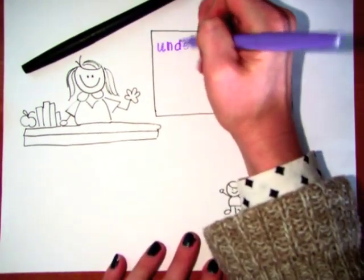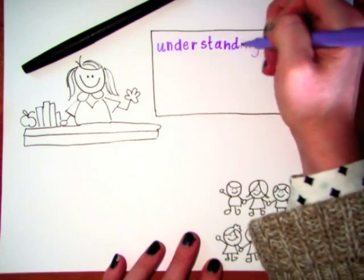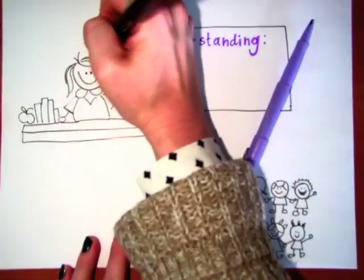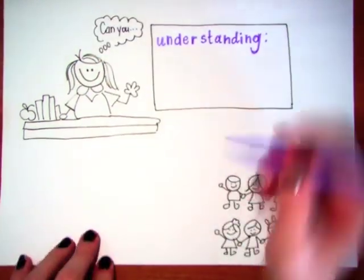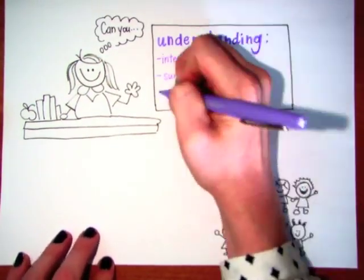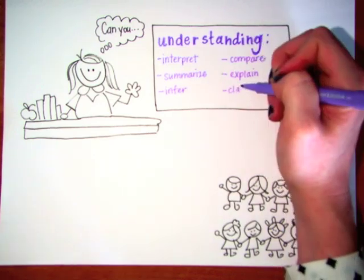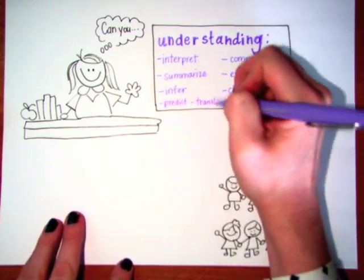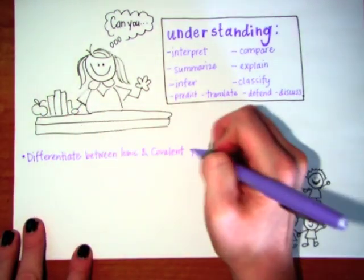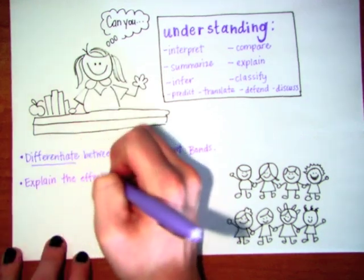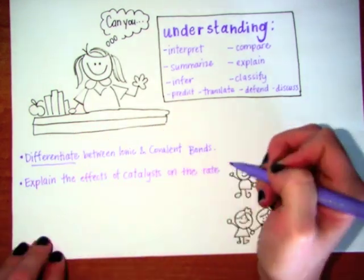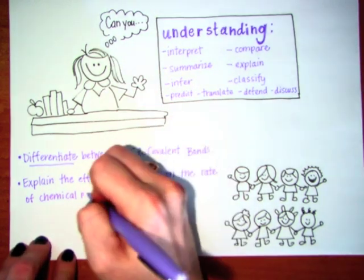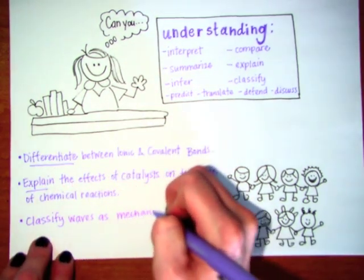The next level of Bloom's asks for students to take their ability to recall factual information to the next level, to prove their understanding by building some kind of relationship between learned facts to construct meaning. What you, the teacher, should be looking for is a child's ability to explain or demonstrate their understanding of the concepts using their own words or actions. In this level of Bloom's, students are asked questions that ask them to do things like interpret, summarize, infer, compare, explain, or classify.